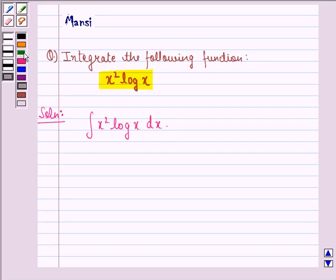Now, according to the ILATE rule, we see that log x becomes the first function because this is a logarithmic function and x squared becomes the second function because this is an algebraic function. Logarithmic function is given preference over algebraic function.